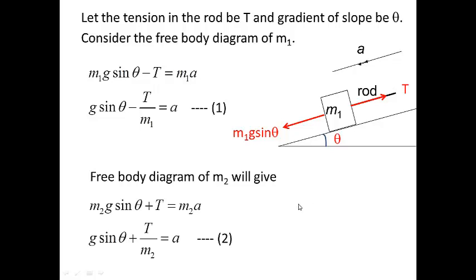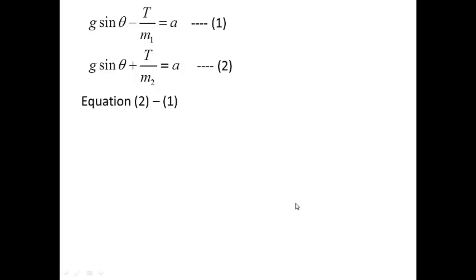Rewriting we get these two equations, equation 1 and 2. Equation 2 minus equation 1 will give us T over M2 plus T over M1 equals zero.